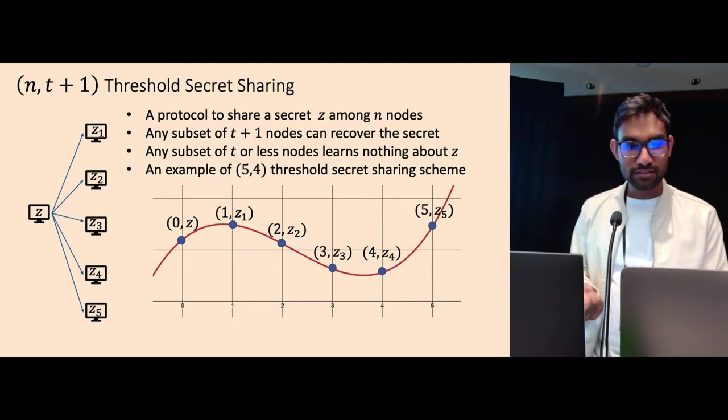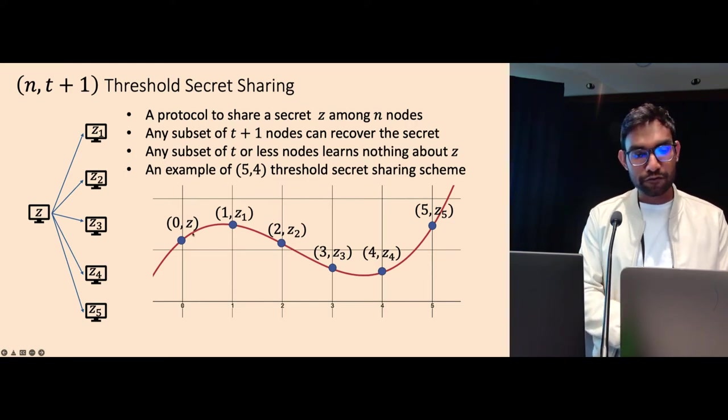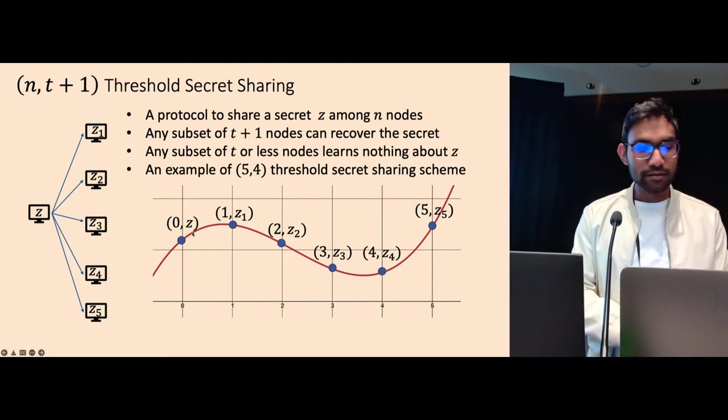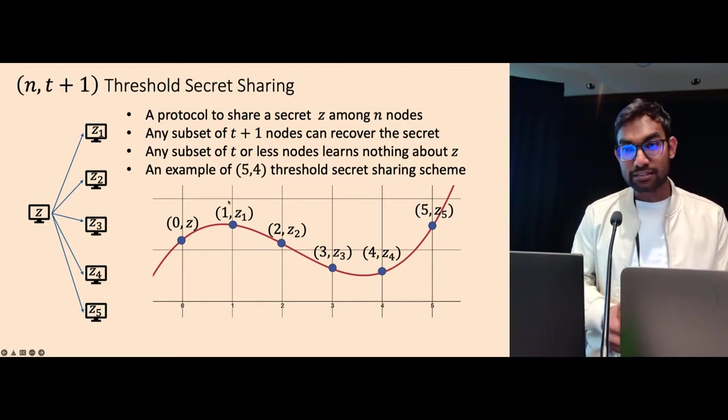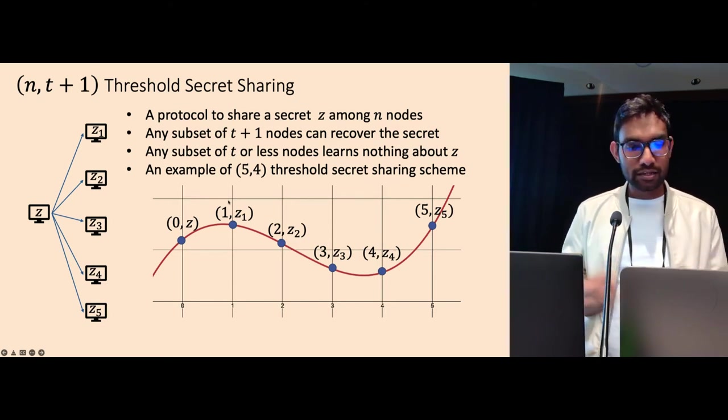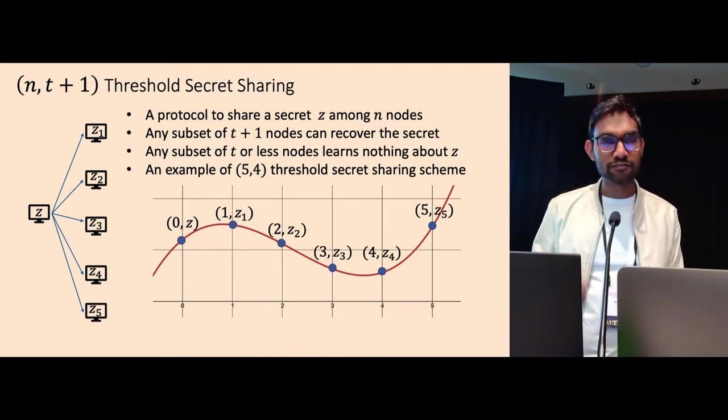You embed the secret into a polynomial evaluation at zero, where the rest of the coefficients of the polynomials are random. And the share of each party is an evaluation point. And it's easy to see that if you pick a degree T polynomial, then any T plus one or more points will uniquely define the polynomial, and you can recover the secret.